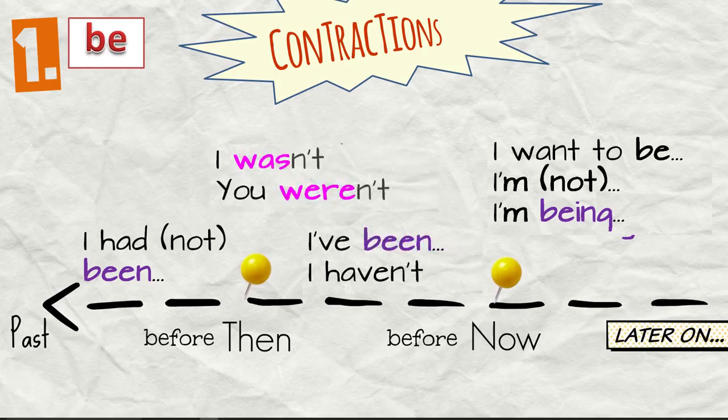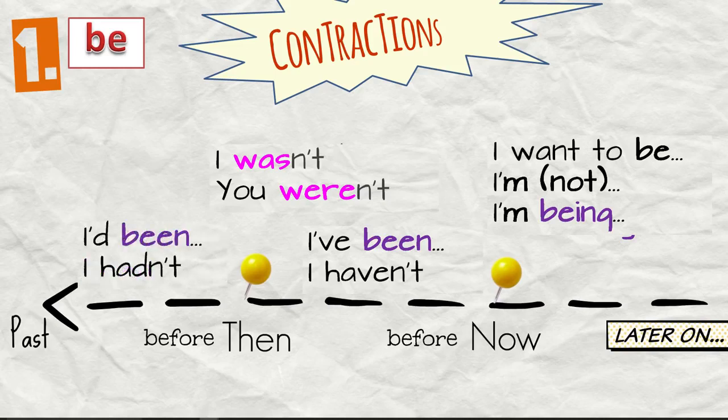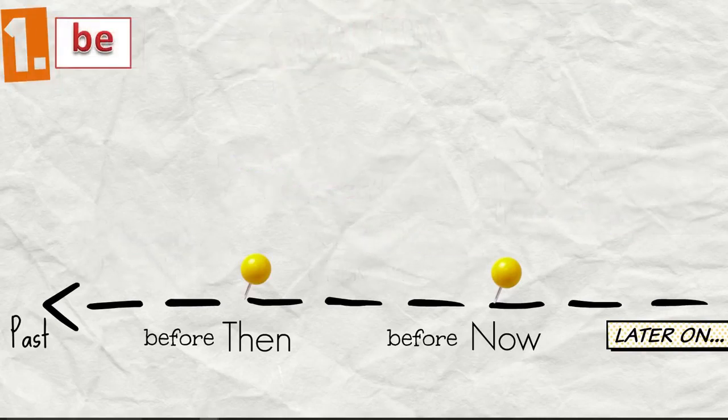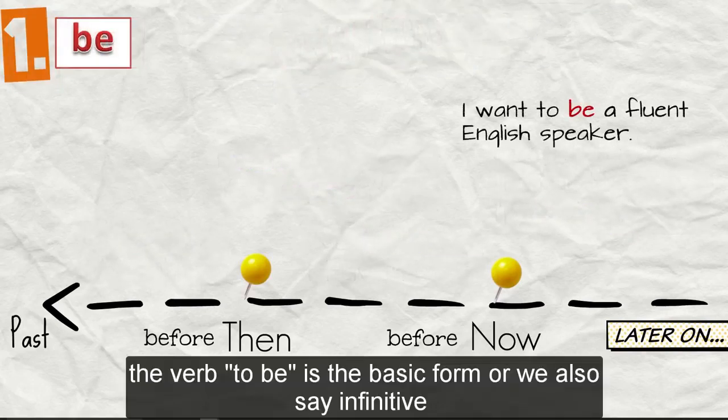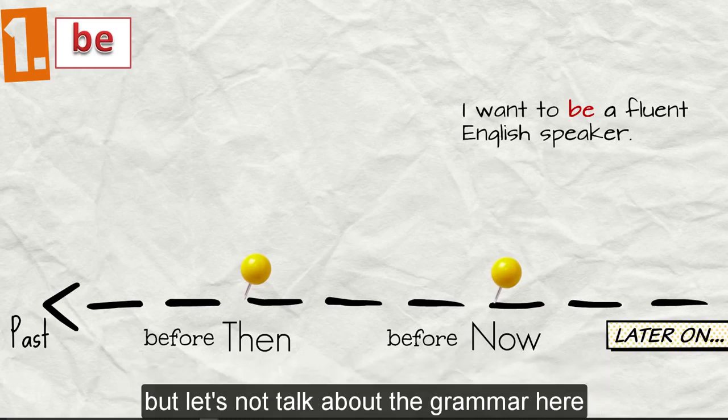Or I have been, I've been, I had been, I'd been. I want to be a fluent English speaker. So the verb to be is the basic form, or we also say infinitive, but let's not talk about the grammar here.